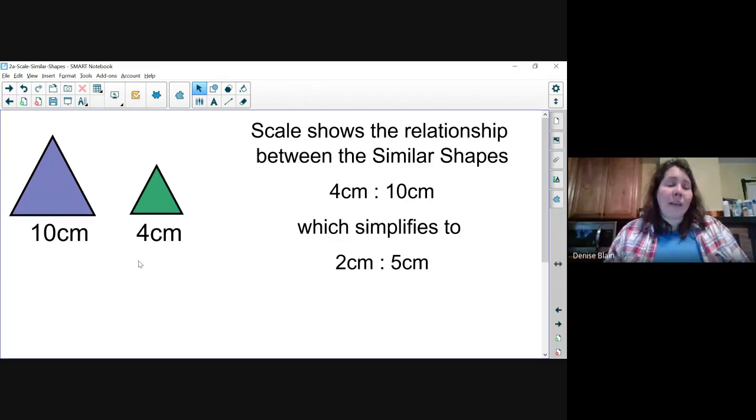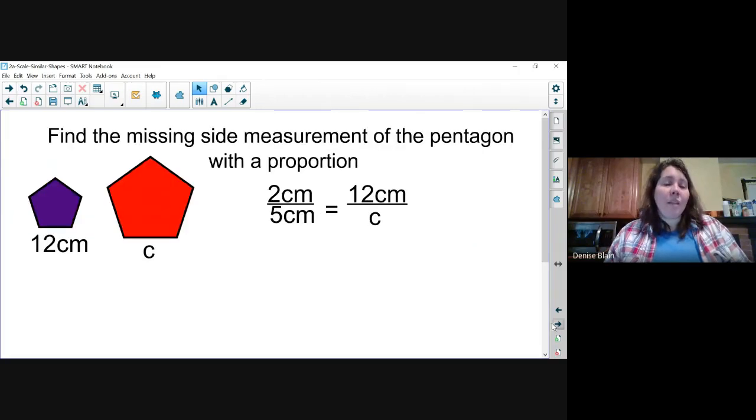Our scale lists the smaller measurement first, then the bigger measurement: 4 centimeters to 10 centimeters, which simplifies down to 2 to 5. We're going to find the missing side measurement of the red pentagon by setting up a proportion.